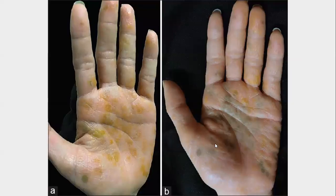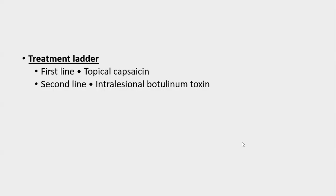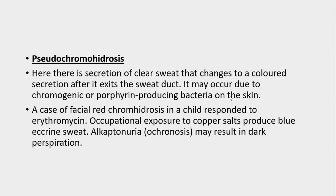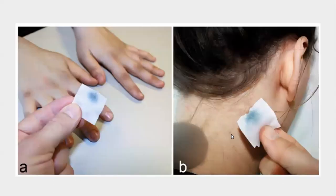Yellow or brownish colored sweat can be seen in affected patients. The first-line treatment for chromhidrosis is topical capsaicin; second-line is intralesional botulinum toxin. Pseudo-chromhidrosis is the secretion of clear fluid that changes to colored secretion after exiting the sweat ducts, due to chromogenic or porphyrin-producing bacteria on the skin. Facial red pseudo-chromhidrosis responds to erythromycin. Occupational exposure to copper salts produces blue eccrine sweat, and alkaptonuria produces a black sweat.